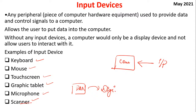From an exam point of view, there could be a question: which among the following is not an input device? For instance, if options are keyboard, mouse, touchscreen, and monitor — the right answer will be monitor, because the question says which is not an input device. Input devices are those used to provide data to the computer.